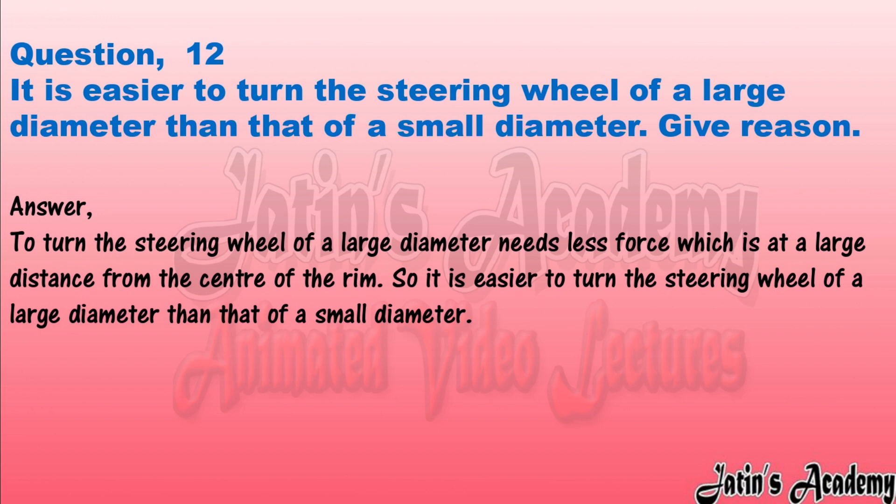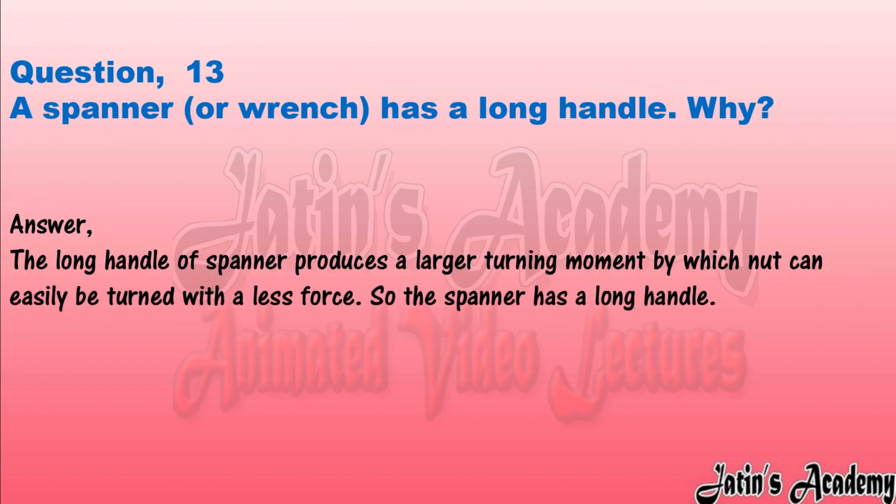Question twelve: it is easier to turn the steering wheel of a large diameter than that of a small diameter. Give reason. Answer: to turn the steering wheel of a large diameter needs less force, which is at a large distance from the center of the rim. So it is easier to turn the steering wheel of a large diameter than that of a small diameter.